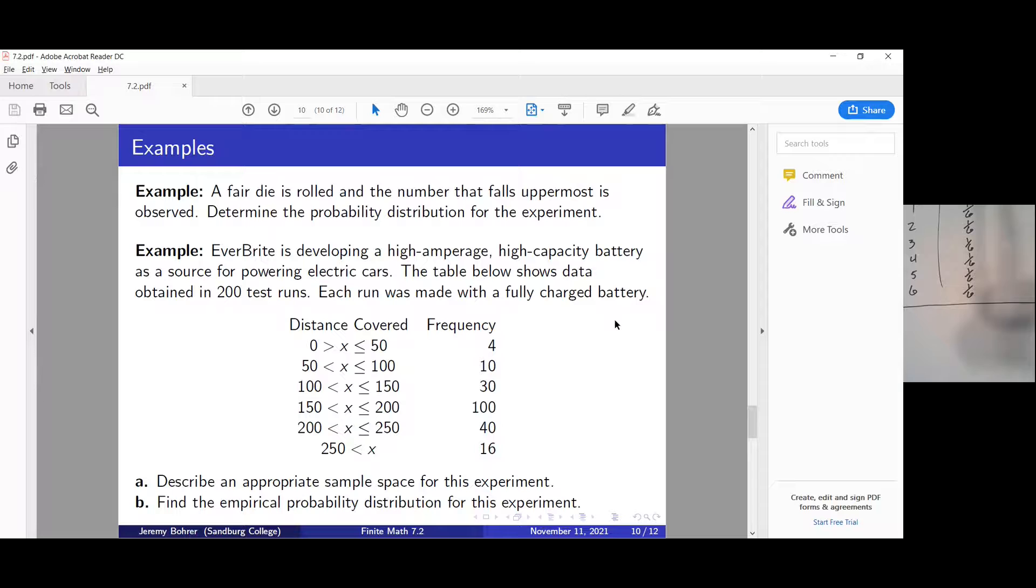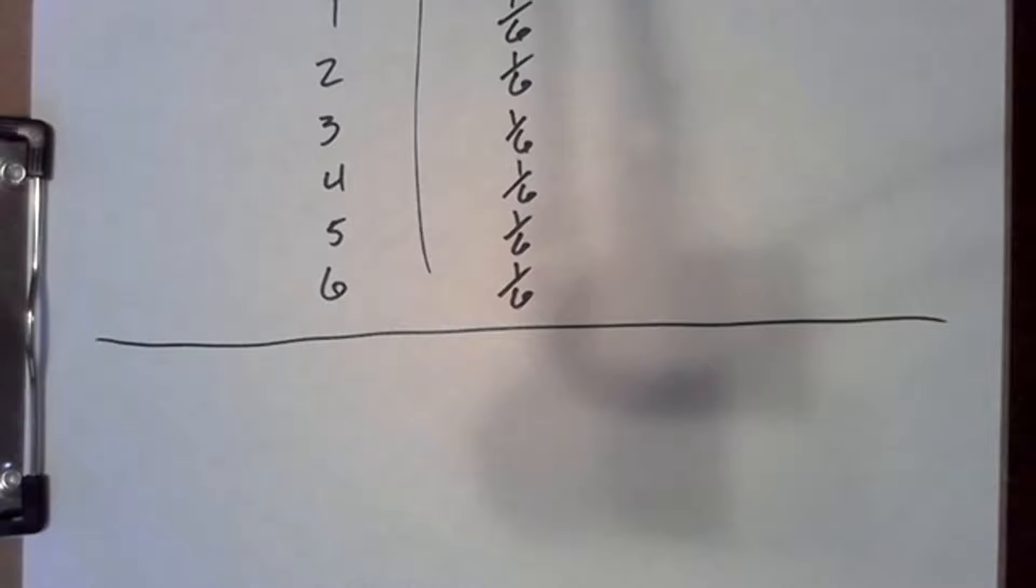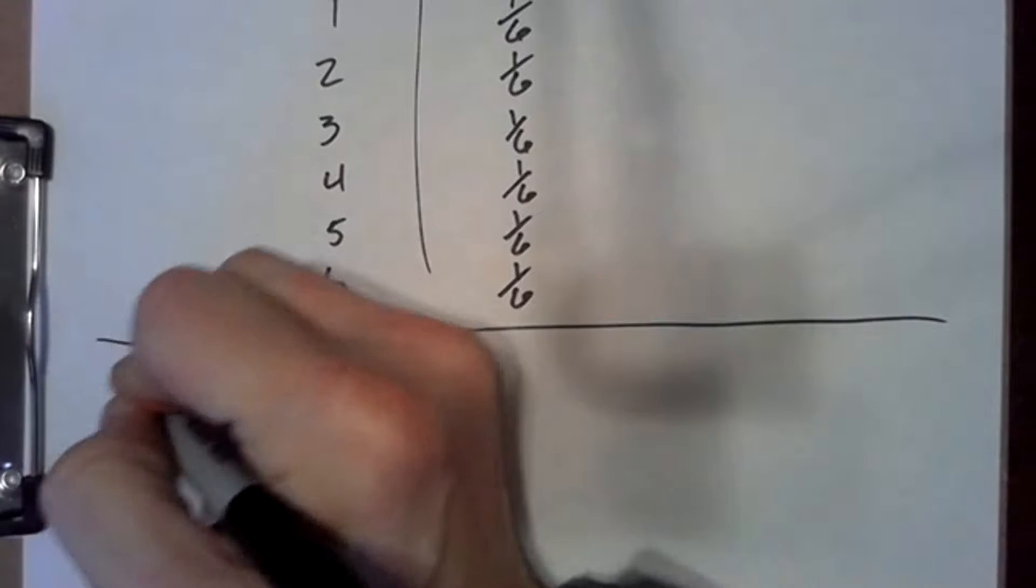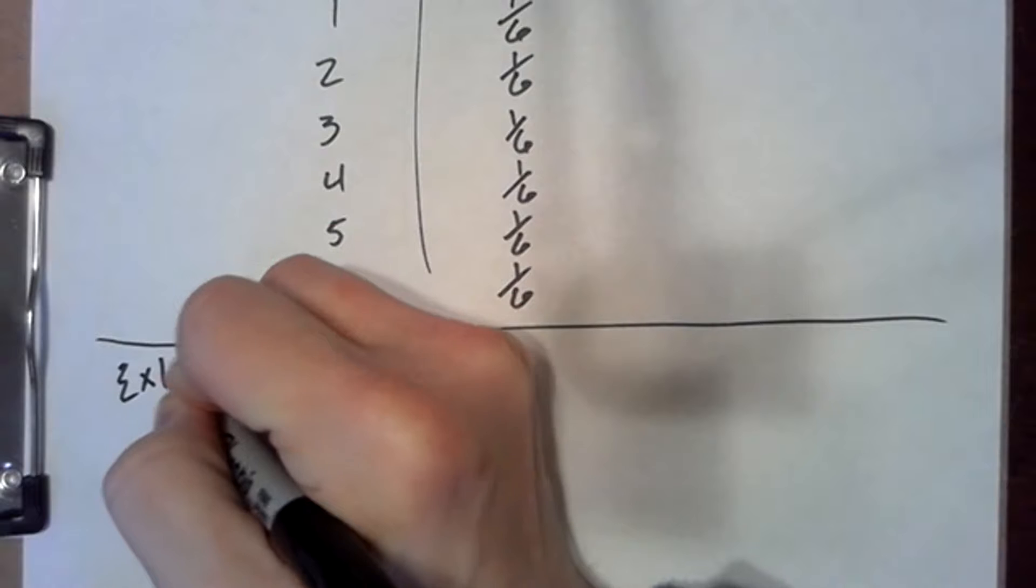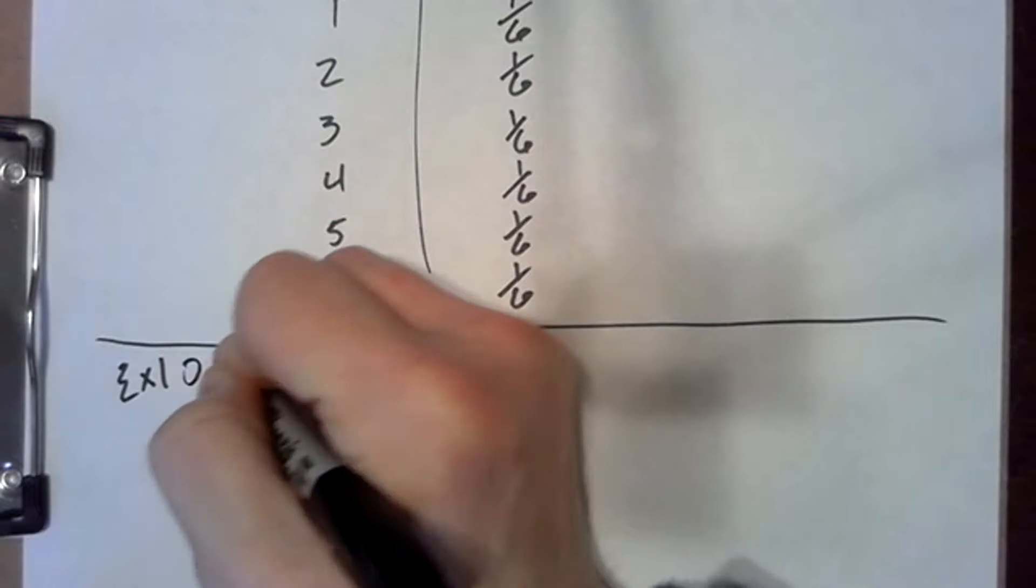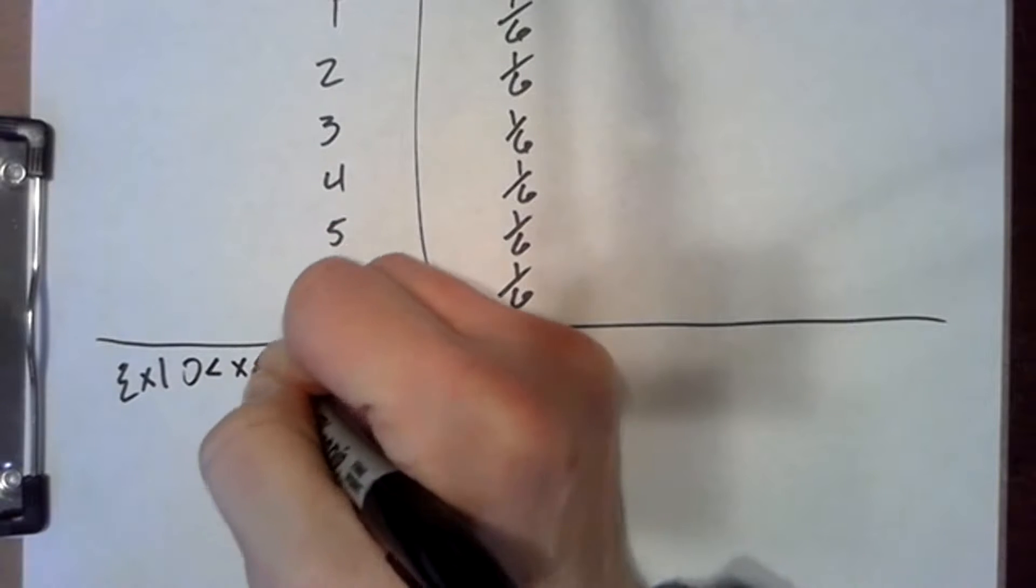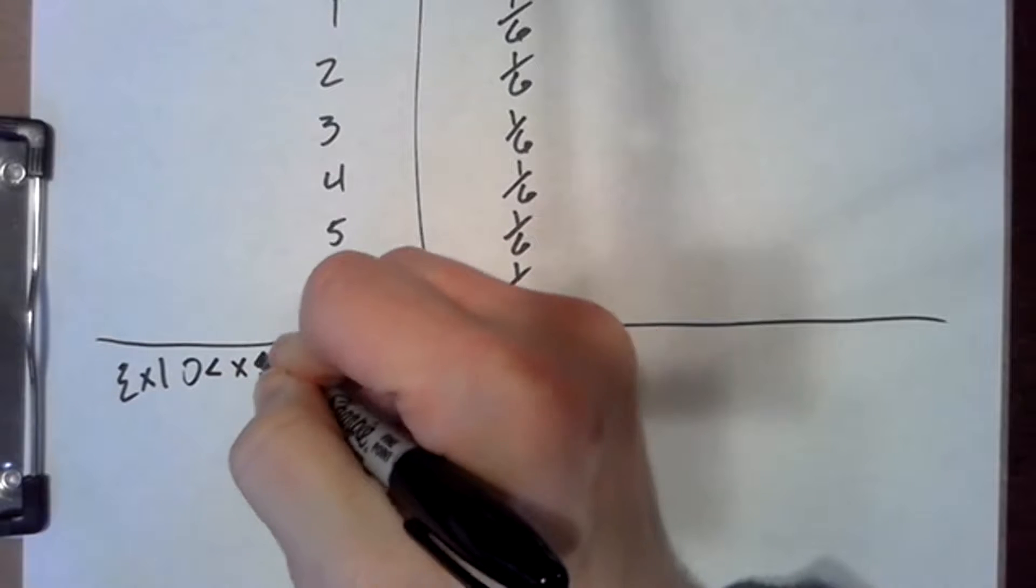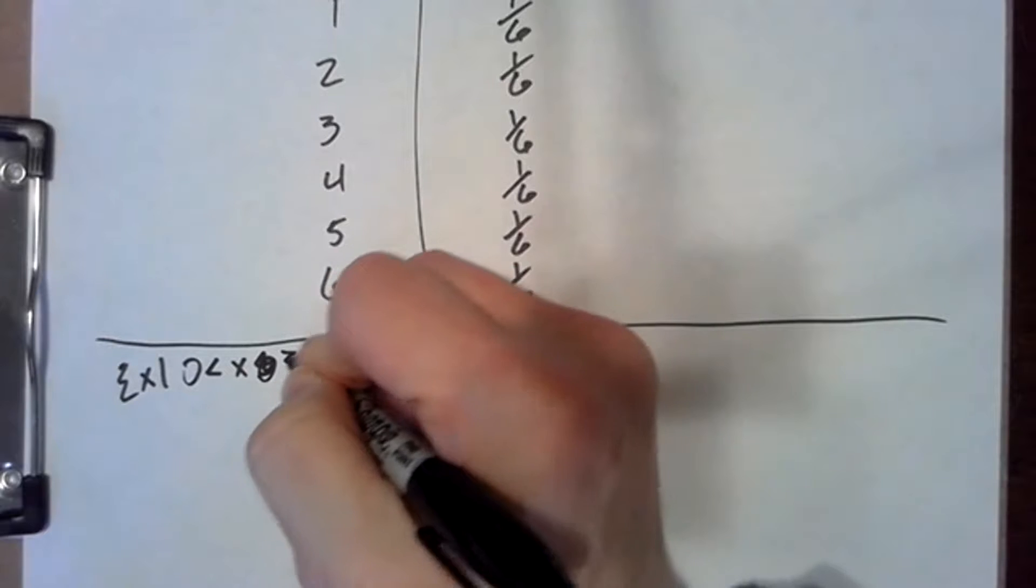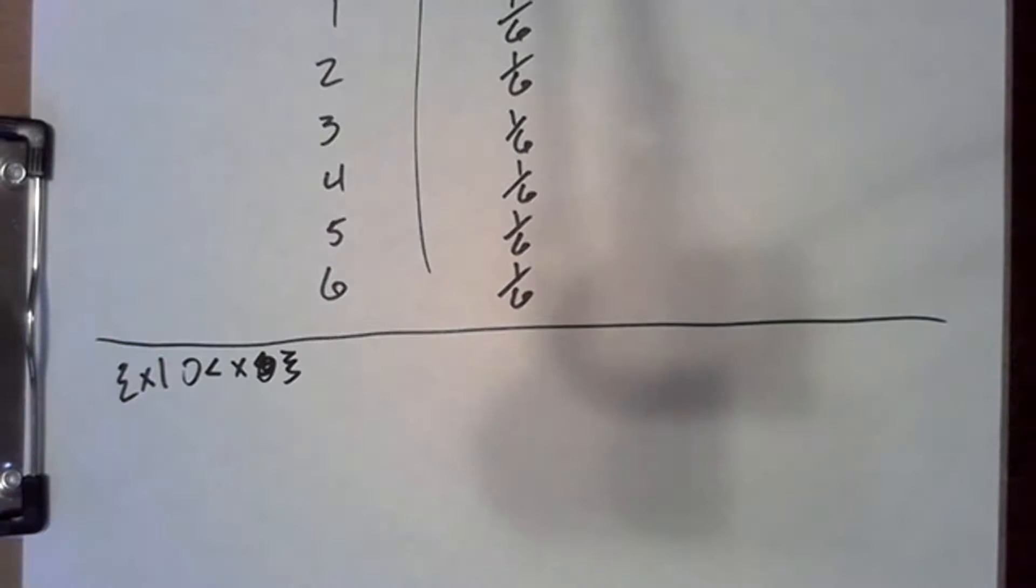So first, we're supposed to describe an appropriate sample space for this experiment. Well, we can do that with set notation. It's probably the easiest way. And we would just say that X is the set of values such that zero is less than X is less than or equal to... Actually, it can be any value greater than zero.